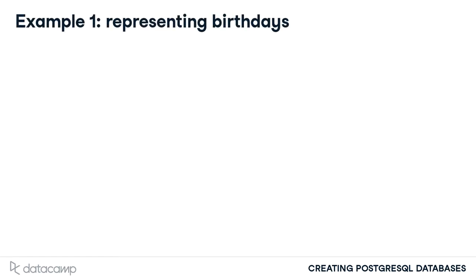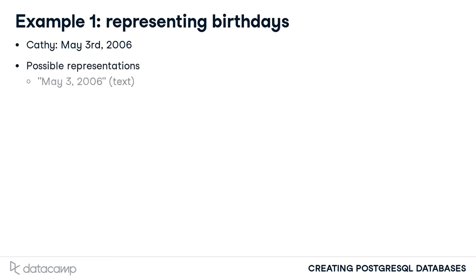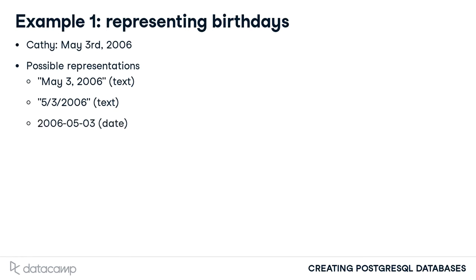Imagine you are a school principal and would like to acknowledge the birthdays of your school students. One of the students, let's call her Kathy, was born on May 3, 2006. We have a few options for representing Kathy's birthday in the database. These include spelling out the month and writing the date and year separated with a comma using a textual representation. Alternatively, we could use numbers for the month, day, and year separated by forward slashes stored as text. Or we could use the data representation utilized by PostgreSQL, which places the year first, followed by a numeric representation for the month, and finally utilizing a day with a dash separating the values.